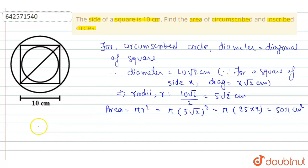Again, for inscribed circle, diameter is equal to square as is clear from the diagram that will be equal to 10 which implies radius r is equal to 10 by 2 that is 5 cm.